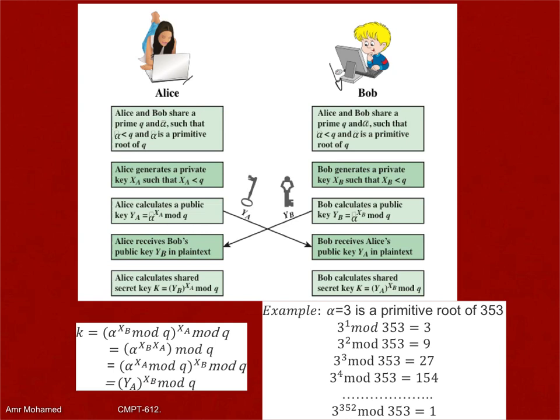Alice and Bob share the values of alpha and Q. Unlike RSA, where these are generated locally, here alpha and Q have to be shared between the two. These values are not the key itself — alpha is in fact the primitive root of Q. That's the first step.